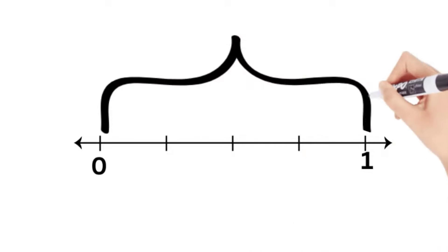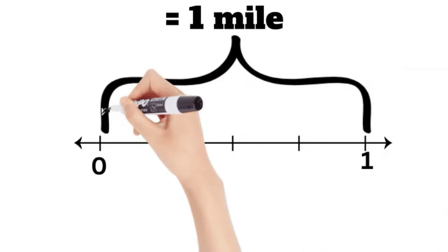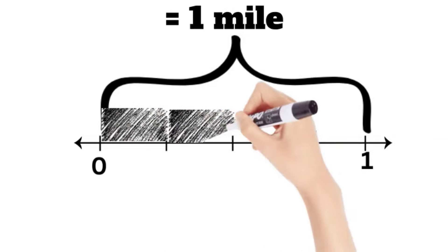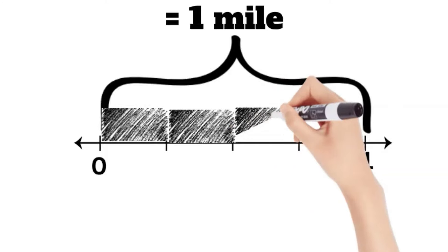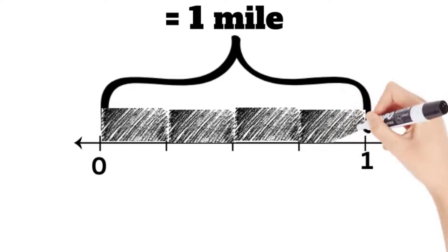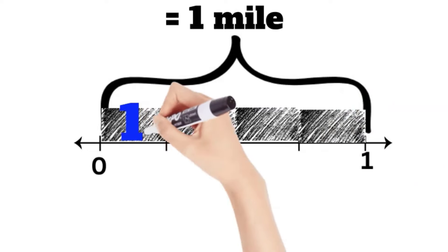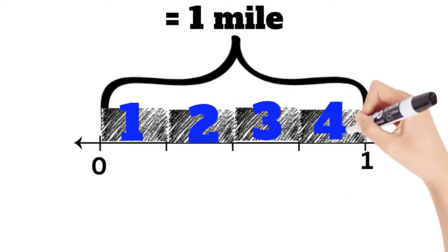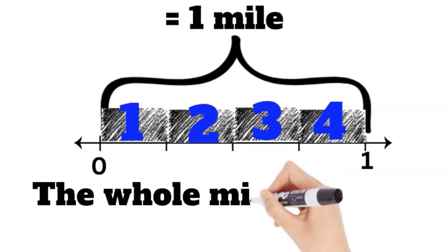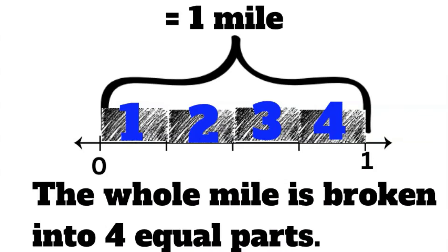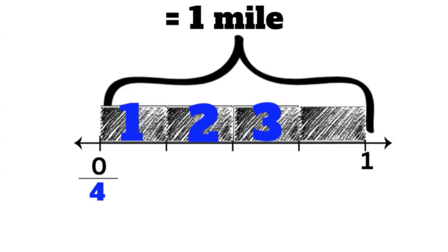From zero to one is always the whole. So in this case, zero to one is one mile. What I'm doing is breaking the whole into parts — it's very much the same as having a bar and breaking it up into parts. Let's count the parts: one, two, three, four parts. So the whole mile is broken into four equal parts. That means four is going to be my denominator, or the number at the bottom.